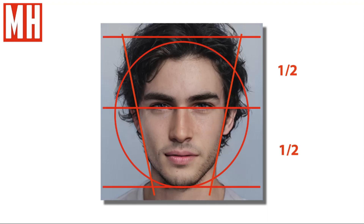Looking at the overall face from this circle, we see that the eyes are exactly midway of that circle. So if you have the top of the head and the bottom of the chin, there's a line smack in the middle — and that is basically where the eyes are positioned. One half above, one half below.